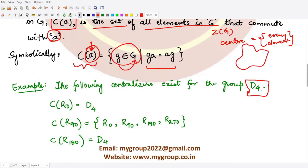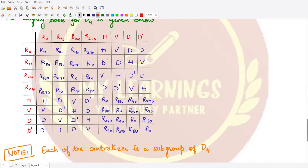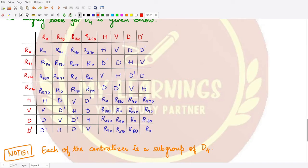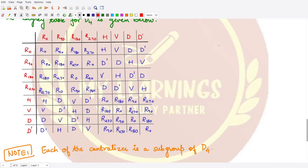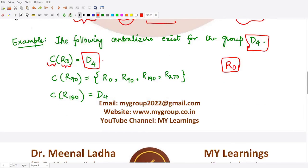As an example, take the dihedral group D4, the group of symmetries of a square. The centralizer of the element r0 is D4 itself. This is because r0 commutes with all elements: r0·r0 = r0, r0·r90 = r90 and r90·r0 = r90, and similarly for all other elements. This is because r0 is the identity of the group, and the identity commutes with every element.